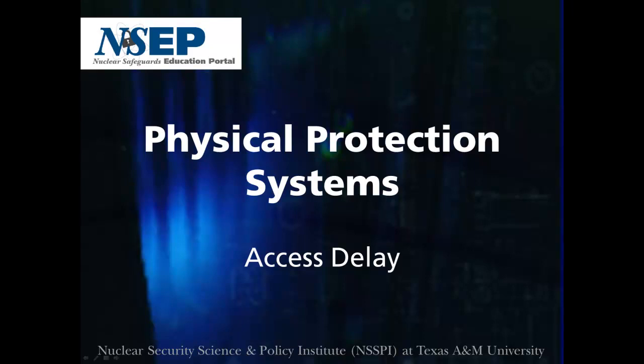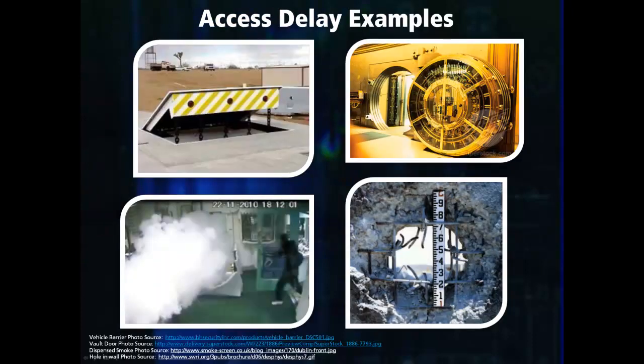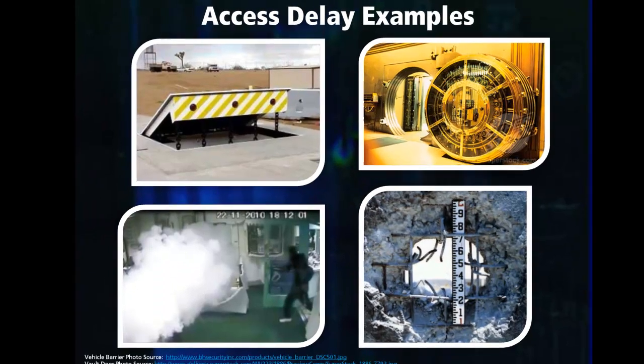In these slides, we will go through some examples of delay barriers. In the overall process of the DEPO methodology, delay is the second of the three main components of the physical protection system. The purpose of delay is to allow enough time after detection for the response force to interrupt the adversary. These pictures show some examples of delay barriers.